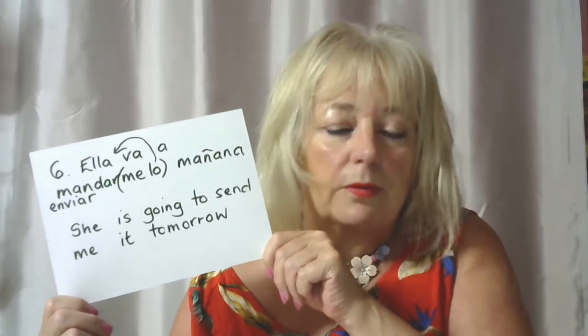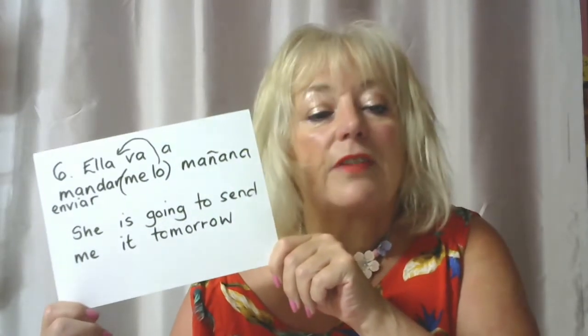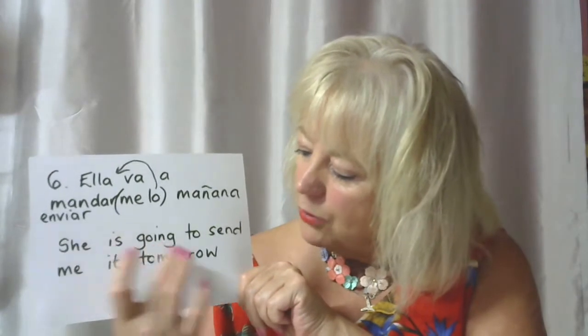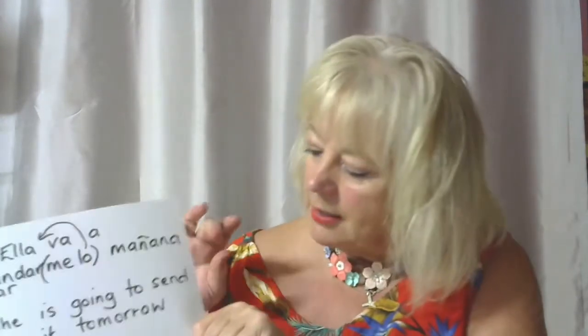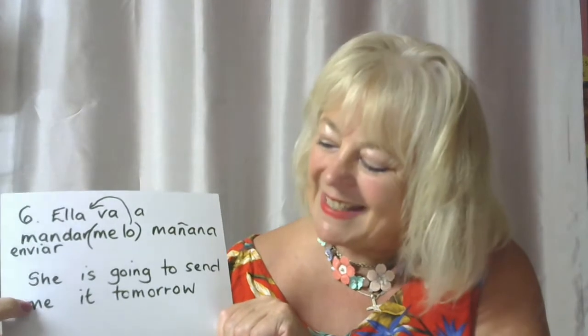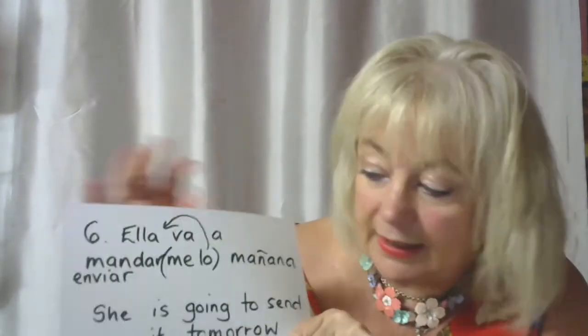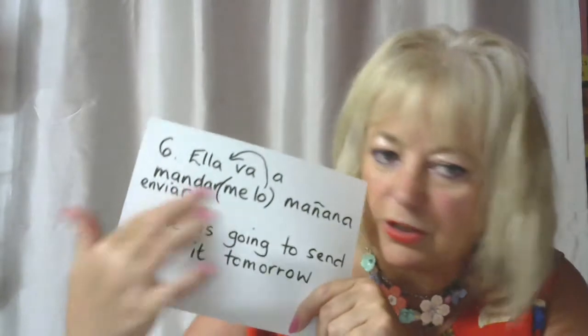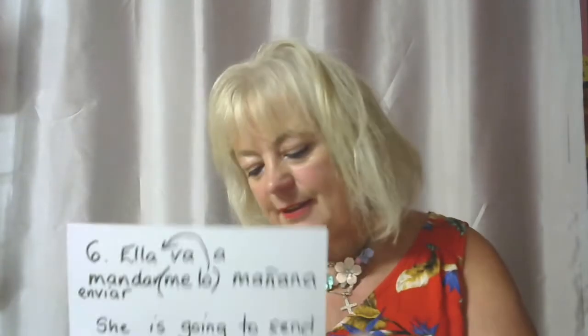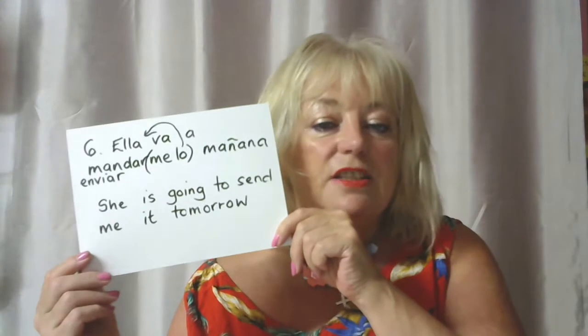Number six: Ella me lo va a mandar o ella va a mandármelo mañana. So in English: 'She' — the person; 'is going to' — va a; 'send me it tomorrow'. 'Send' is the main verb, 'me' is the indirect, 'it' is the direct. She is going to send me it tomorrow. In English we don't have the option of putting it in two positions like in Spanish — solo hay una forma.